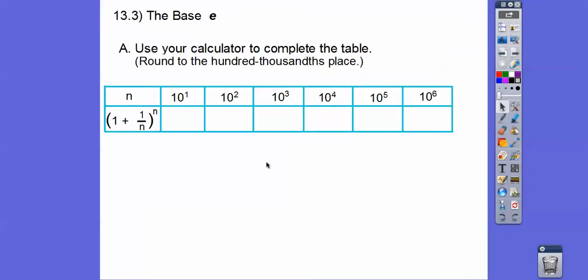So in your calculator, we're going to go ahead and plug these values in. Let's plug in 10 to the first right here. So 10 to the first is 1 over 10. So 1 over 10 is 0.1. So 1 plus 0.1 is 1.1 to the 10th. If you plug that in your calculator, you get that right there.